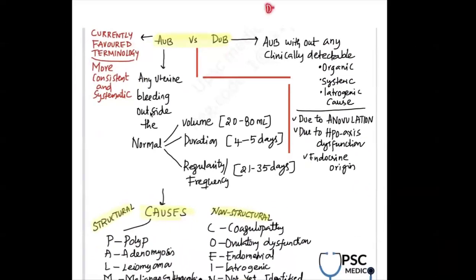It was previously mentioned as DUB, but now the nomenclature AUB is more common. So what are the classical differences?